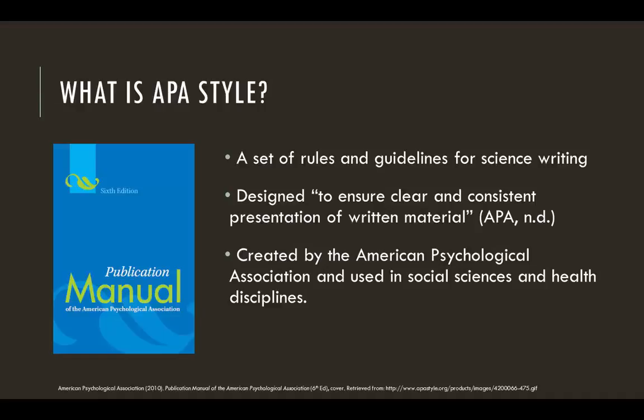Every academic discipline has its own set of rules and guidelines for writing. This ensures that scholars and researchers communicate with each other in a clear, consistent, and efficient way. APA Style, which the American Psychological Association developed in 1929, is widely used today in the behavioral, health, and social sciences.